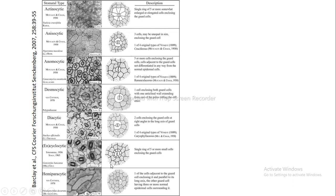Encyclocytic means a single ring of five or more cells enclosing the guard cells, but these surrounding cells are smaller than the guard cells. In actinocytic, the surrounding subsidiary cells were larger than the guard cells, but in encyclocytic, the five or more surrounding cells are smaller than the guard cells.